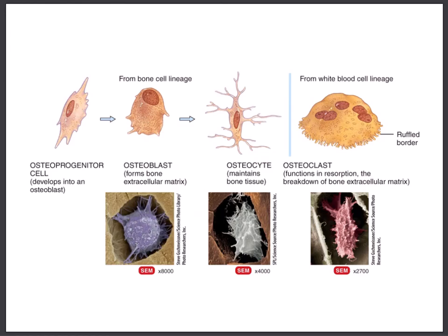Looking at Tortora's diagram, the progression is clear: osteogenic cell produced the osteoblast, osteoblast made the matrix, and once trapped in the matrix it became the osteocyte. The osteocyte has all these cytoplasmic extensions, lives in the lacuna, and is a bigger cell — only needing 4,000x magnification compared to the osteoblast's 8,000x. Its function is maintaining bone tissue.